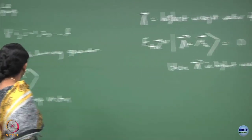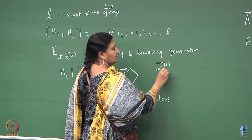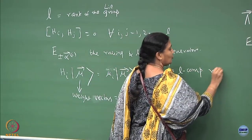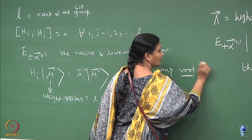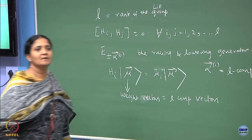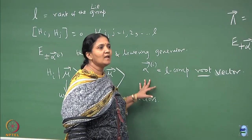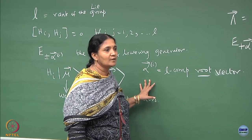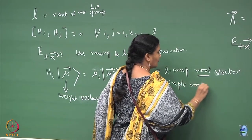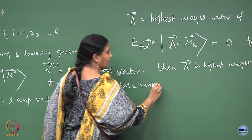The alpha_i's are also L-component root vectors. These are L-component root vectors, and we can have L number of simple roots — the number of simple roots equals the rank L.